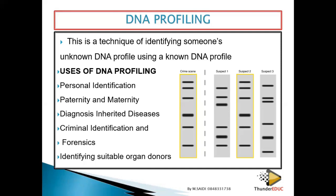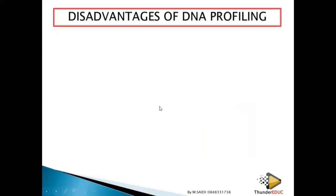Another use is identifying a suitable organ donor. It's not easy to find an organ donor — you first have to check that the DNA profile of the donor and the recipient are compatible or almost the same. Otherwise, the organ will be rejected by that person's body. Once they are compatible, the organ is transferred from one person to another.